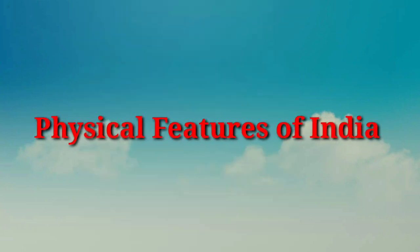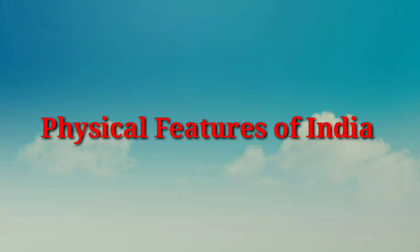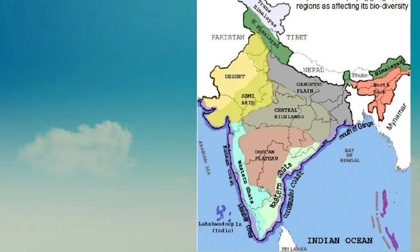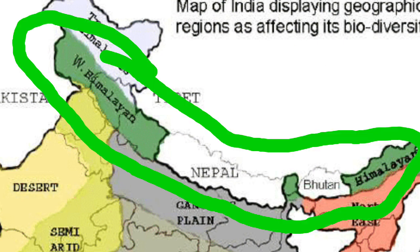After learning about the location of India, let's move on to the physical features of India. The physical divisions of India can be grouped into the northern mountains, the northern Indo-Gangetic plains, the peninsular plateau, the Indian desert, coastal plains and islands. The Himalayas form the northern frontiers as a huge mountain wall about 3,600 kilometers long, comprising the snow-capped mountain ranges of Karakoram and the Himalayas, with width varying between 150 and 400 kilometers.